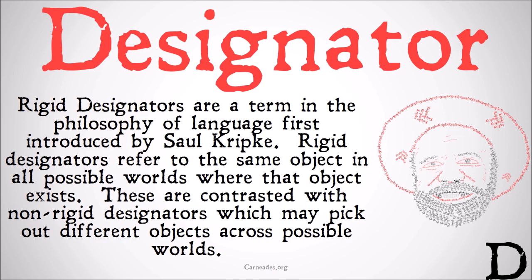So if Saul Kripke was a philosopher in this world, but a wizard in another world and a lawyer in another world, the name 'Saul Kripke' would refer to all of those different objects, despite them having slightly different properties. These are contrasted with non-rigid designators, which may pick out different objects across possible worlds.